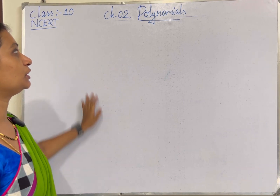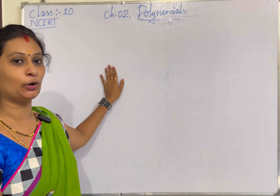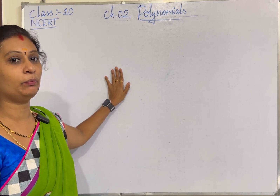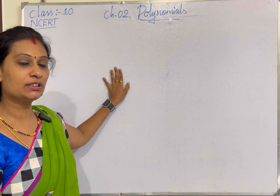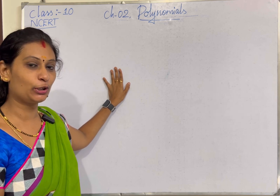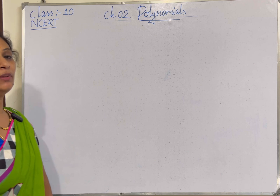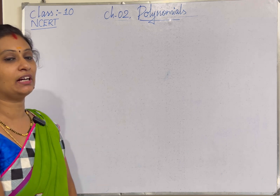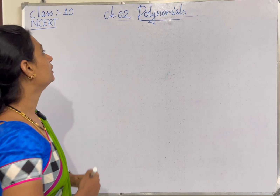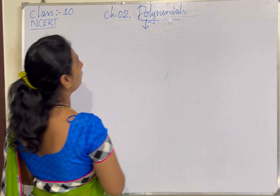In this chapter, we are going to discuss what is a polynomial, how the general form of a polynomial will be, what is the geometrical meaning of zeros of a polynomial, and what is the relationship between the coefficients and the zeros of the polynomial. First, we will define what is a polynomial.